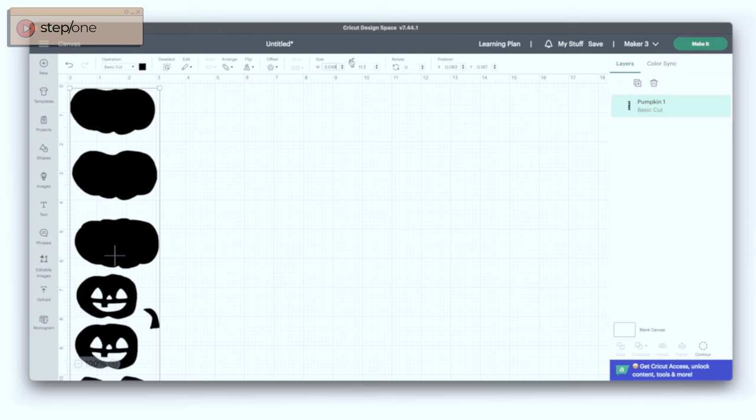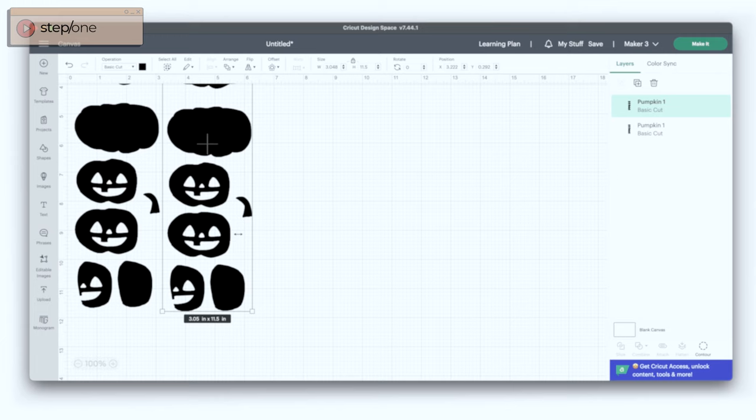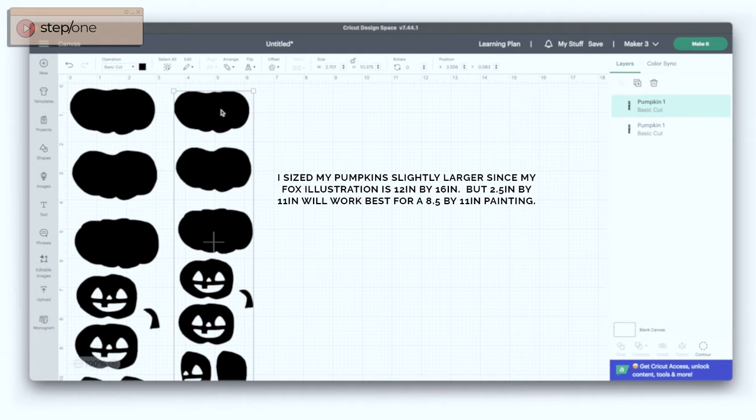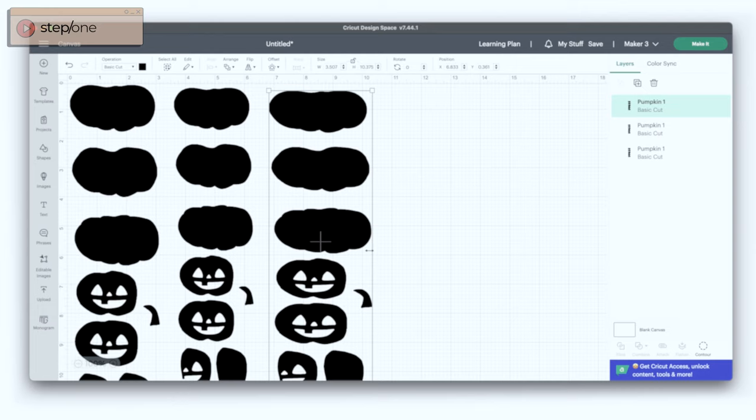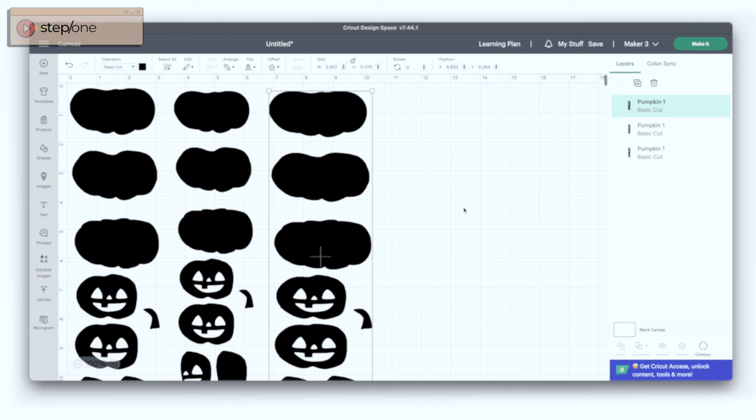Then what I did is I copied that file and then pasted it two more times. Then I clicked the unlock button on my file and basically stretched these images with my mouse to both be smaller horizontally as well as larger. This will create an assortment of wider and smaller pumpkins that you can play around with later.